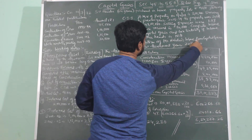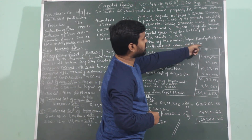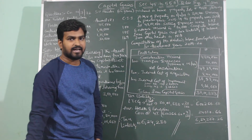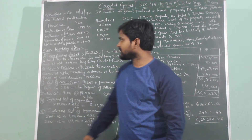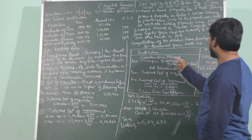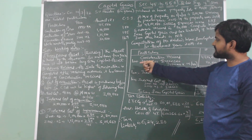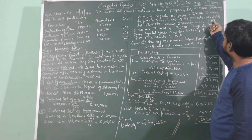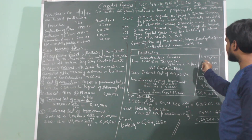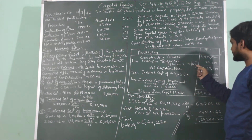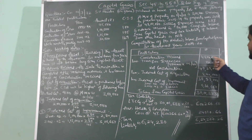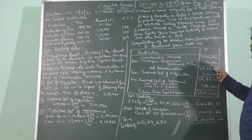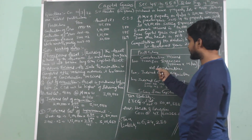Income from capital gain for assessment year 2019-2020: consideration received — the house property is sold for Rs. 48 lakhs, hence consideration received is Rs. 48 lakhs. Less transfer expenses: transfer expenses is 1.5%, calculated on consideration received, that is 48 lakhs × 1.5 ÷ 100 = Rs. 72,000. Subtracting Rs. 72,000 from Rs. 48 lakhs gives Rs. 47 lakhs 28,000, which is the net consideration.